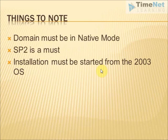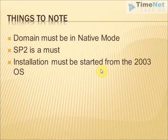There are some things we have to be sure of before starting the installation. The 2003 domain must be in native mode. Domains have two types of modes: native mode and mixed mode. You have to make sure the domain you are going to upgrade is in native mode, and Windows Server 2003 Service Pack 2 must be installed. You have to start the installation after logging on to the 2003 OS from the 2008 DVD — you do not boot from the DVD. You log on normally to the 2003 machine and start the installation from the DVD itself.